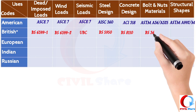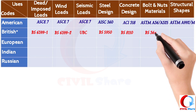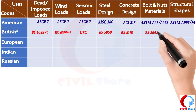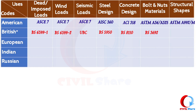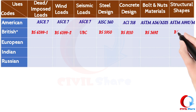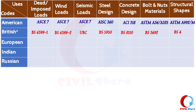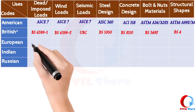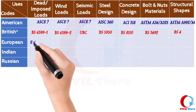BS 3692, 1967 code of practice is used for specification for hexagon bolts, screws, and nuts. BS 4 Part 1, 1993 code of practice is used for structural steel section specification for hot-rolled sections.